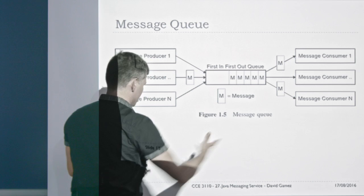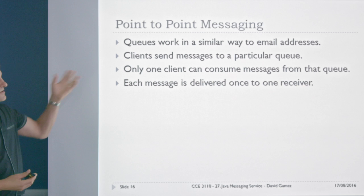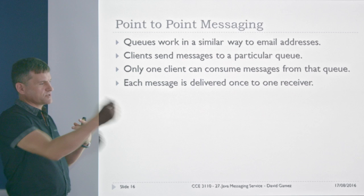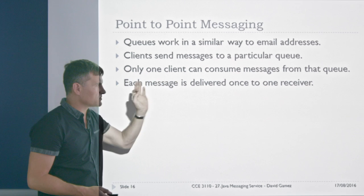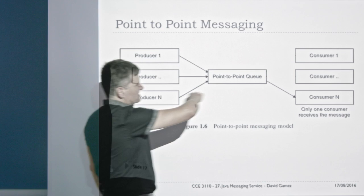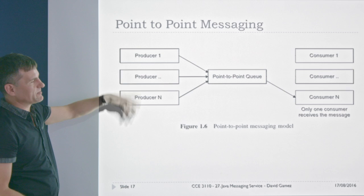There are two types of queue. First, point-to-point messaging, where queues are similar to email addresses — there's a unique single consumer of messages from a particular queue. Each message is delivered once to one receiver. Lots of different people can send messages to consumer N's queue, but only consumer N can receive those messages.